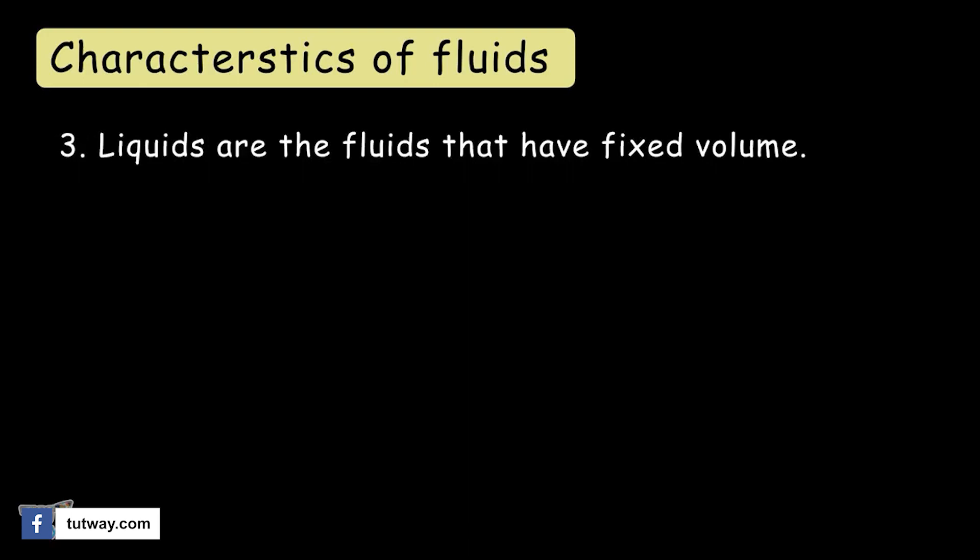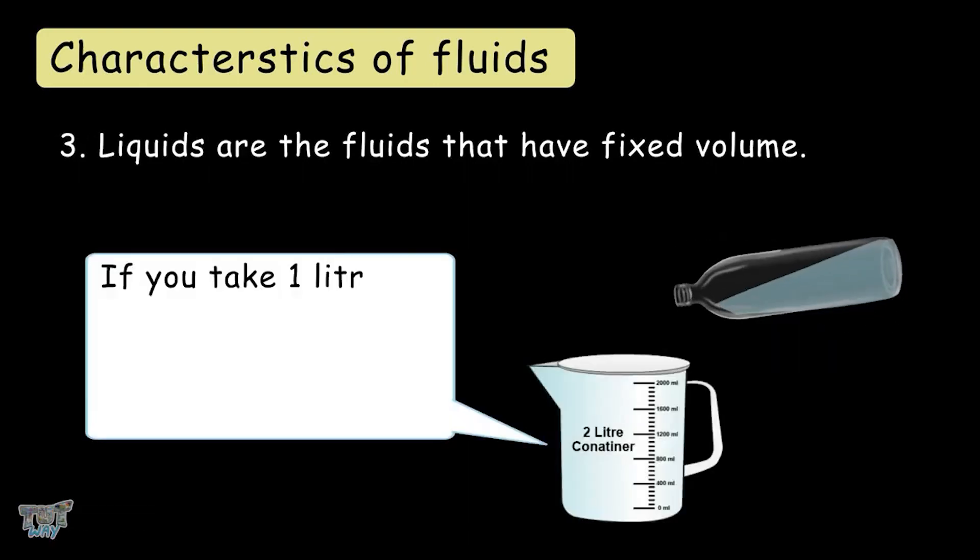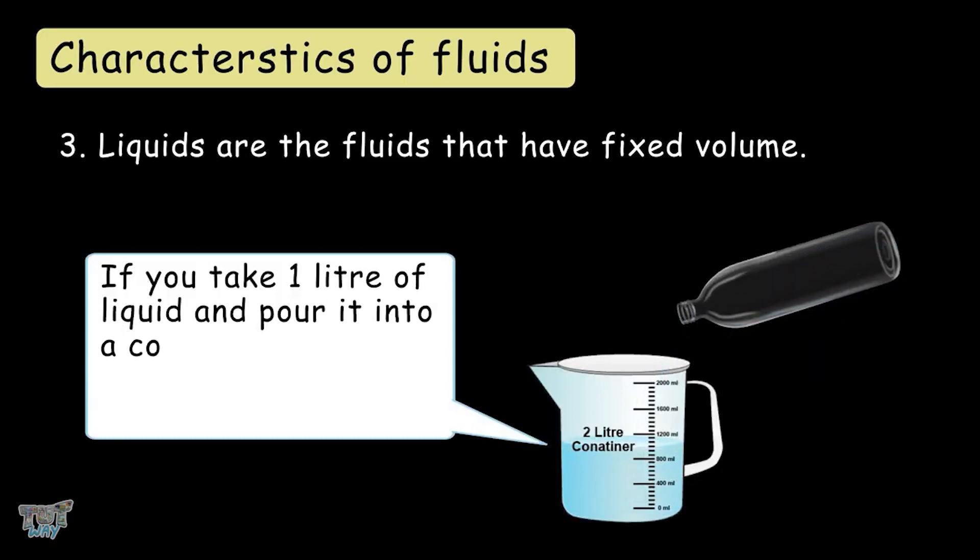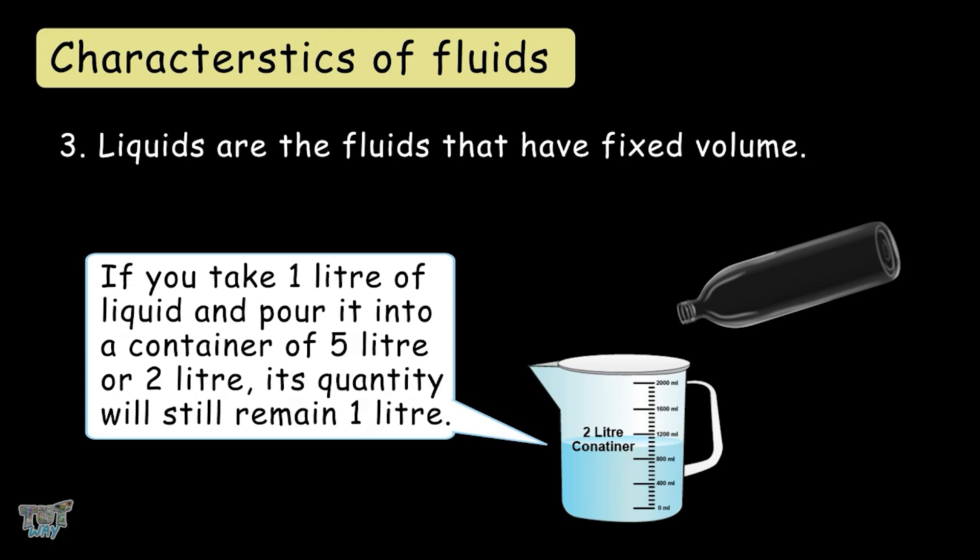Number three is that liquids are fluids that have a fixed volume. So, if you take one liter of liquid and pour it into a container of two liters, its volume will still be one liter. So, liquids have fixed volumes.